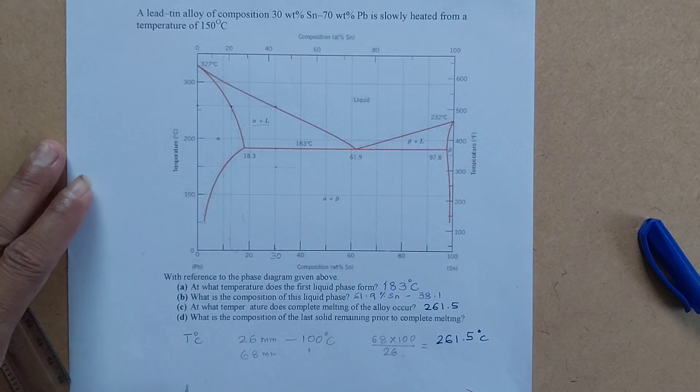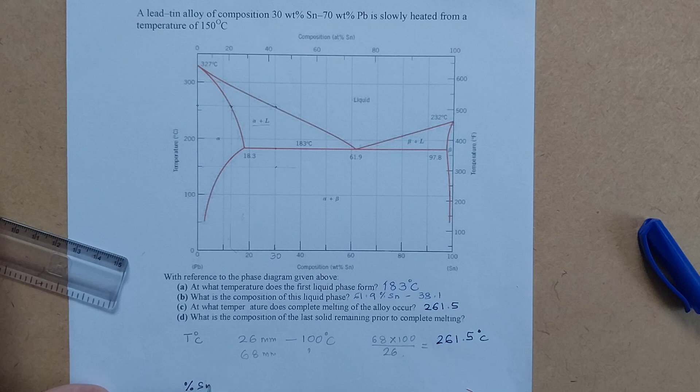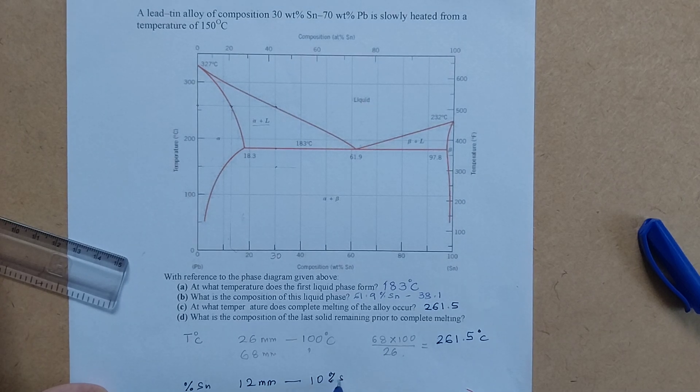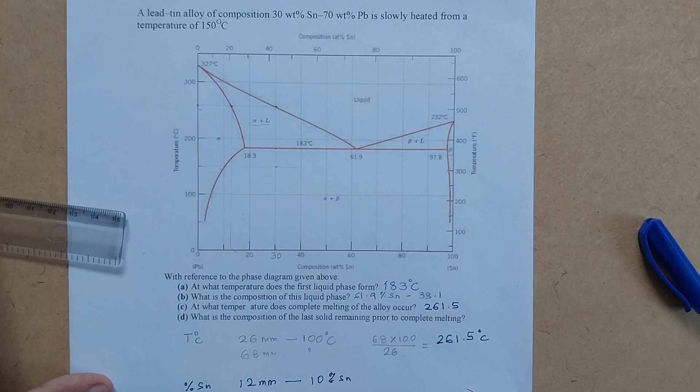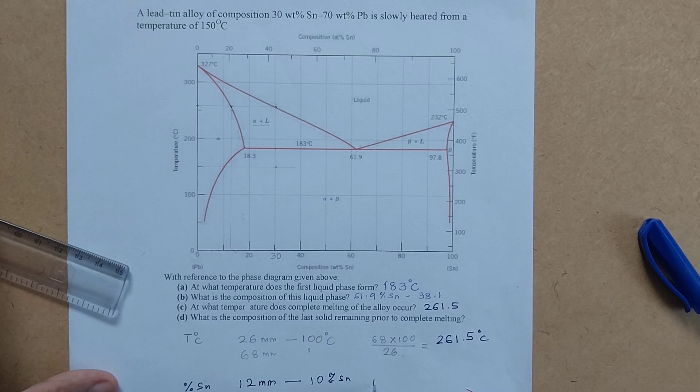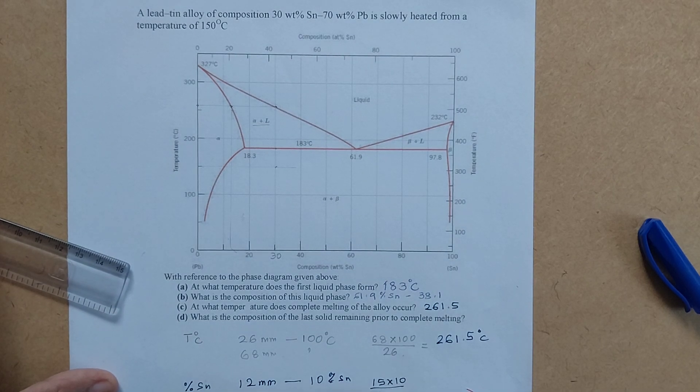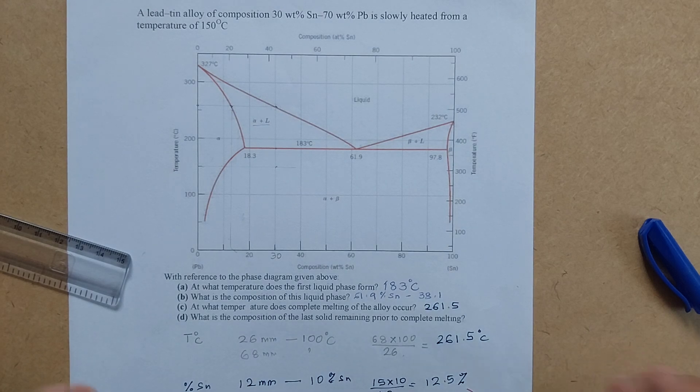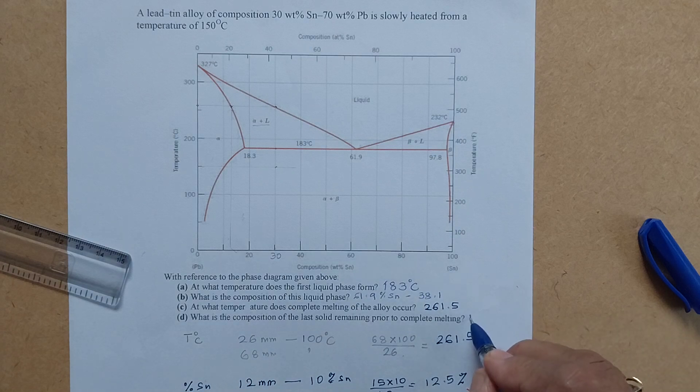So here when we talk about percentage tin, we note that there is 12 mm distance used for every 10 percent tin. And since we are interested here in 15 mm distance, the answer is going to be 15 multiplied by 10 divided by 12. And that works out to 12.5. When you multiply by 100, this works out to 12.5 percent.